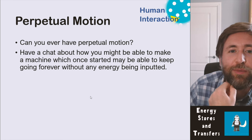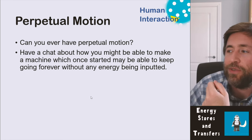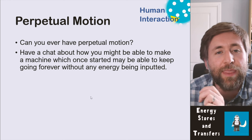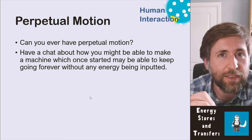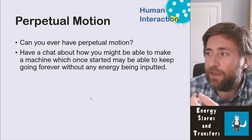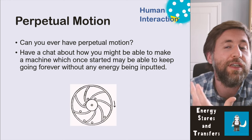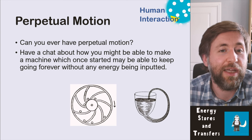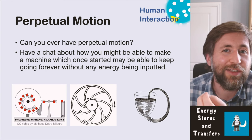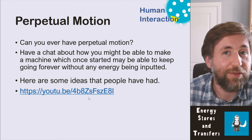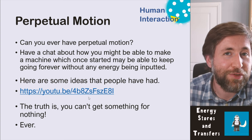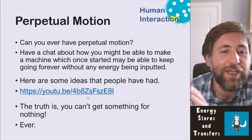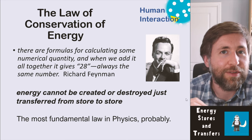Perpetual motion is a really interesting idea that physicists and people have been discussing for a long time — and if you could solve it, you'd be instantly rich. Could you ever have perpetual motion — something set in motion that keeps going forever, working against frictional forces, allowing a vehicle to drive without any input energy? The truth is you could never have perpetual motion. You cannot get something for nothing — and that is the law of conservation of energy.